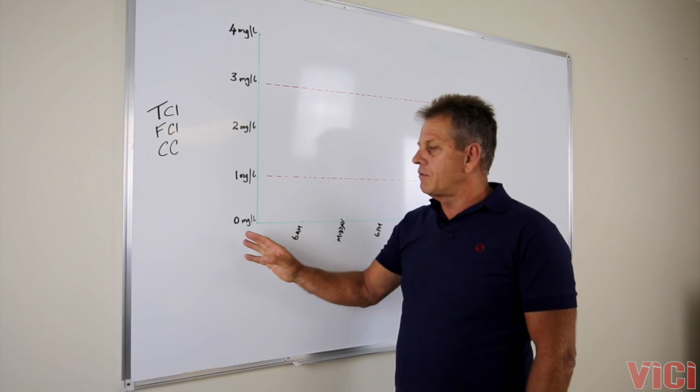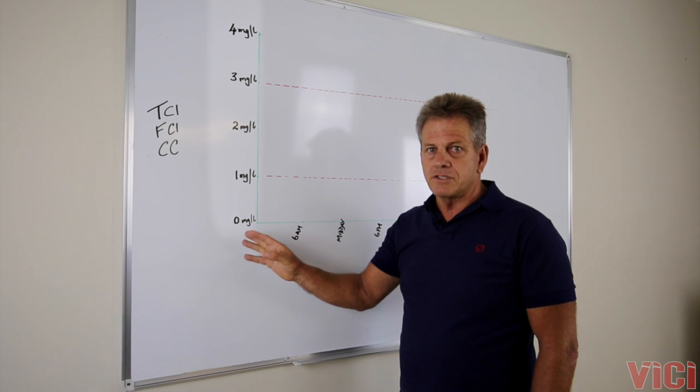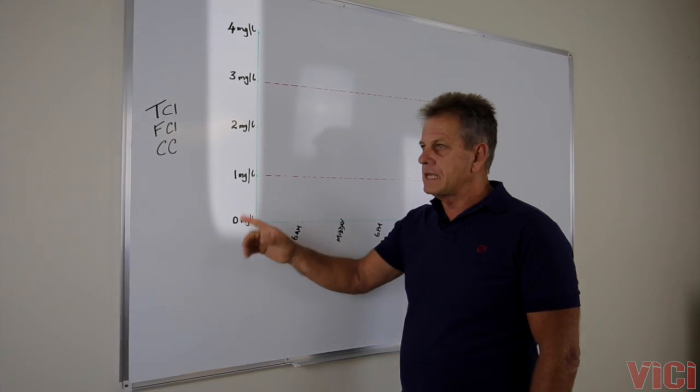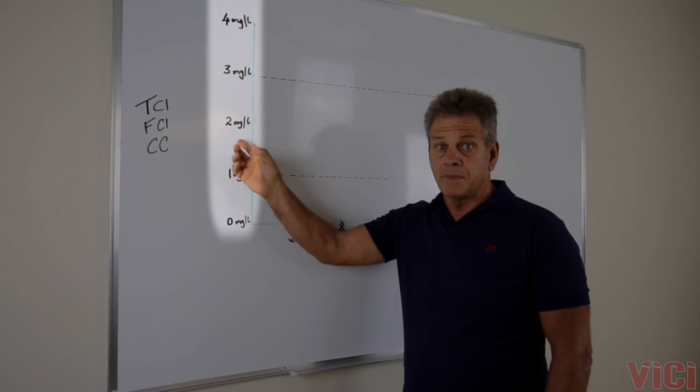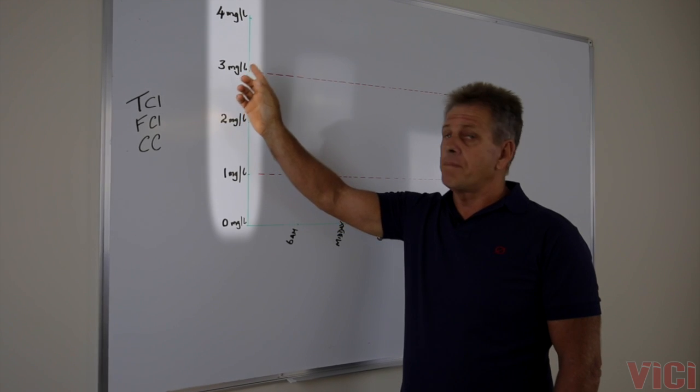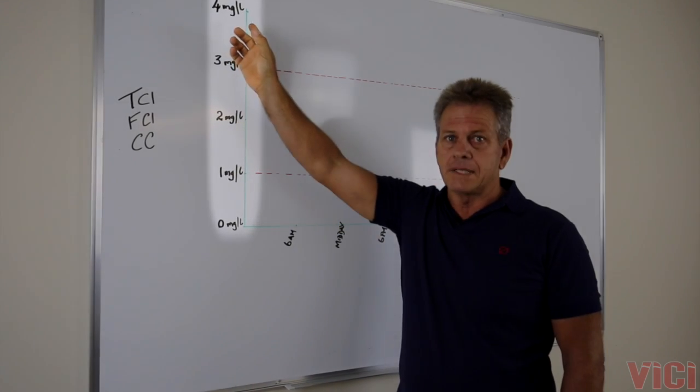On the other side here, we're going to look at the chlorine dosing rates starting from zero parts per million, one part per million, two parts per million, three parts per million, and four parts per million.